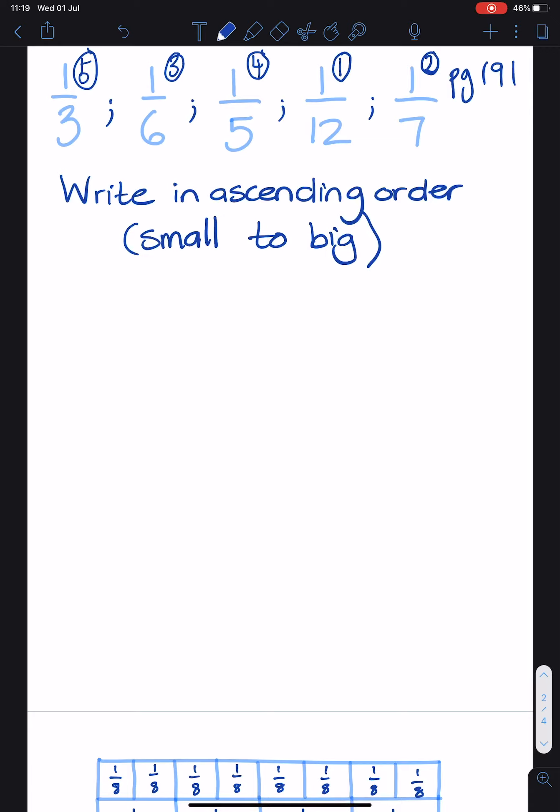Now we need to rewrite it for our answer. So, the first one, being the smallest, is the twelfth. Then the second one is the seventh. The third one is the sixth. The fourth one is the fifth. And the last one is the third. So we have written them from the smallest to the biggest.